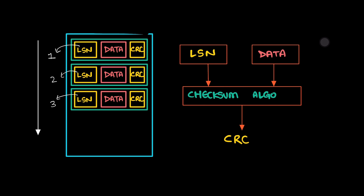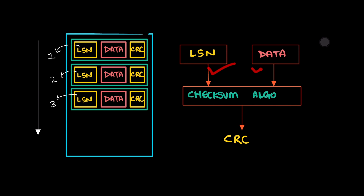Essentially, a WAL is comprised of a series of log records. Each record typically contains information like the log sequence number, the stored data, and a cyclic redundancy checking code. Entries in the WAL are sequentially ordered, and each has a unique log sequence number. The CRC code, which is generated using the LSN and the stored data, plays a crucial role in verifying data integrity during WAL reads.